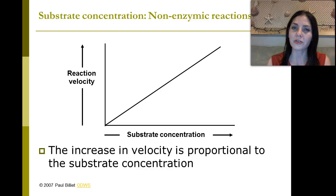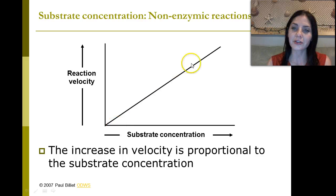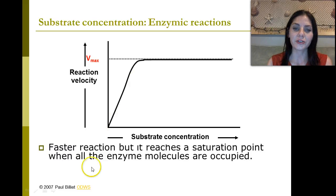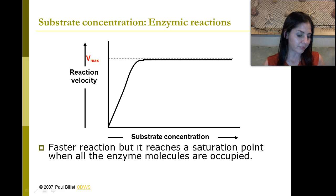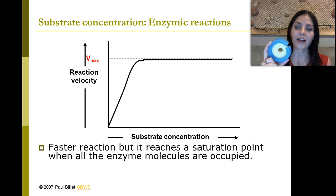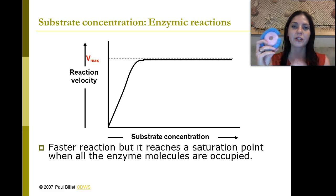Substrate concentration also affects enzyme activity. An increase in velocity is proportional to the substrate concentration — the more substrate there is, the higher the reaction velocity is going to go. However, eventually it's going to level off. The faster the reaction goes, the faster enzymes can catalyze those substrates, but eventually all of the enzymes are going to be occupied. At one point, all of the enzymes will have a substrate they're catalyzing, and once all the enzymes are full, the substrate is going to have to wait for an enzyme to finish before it can catalyze another one.